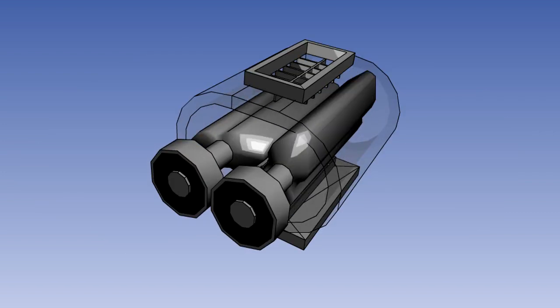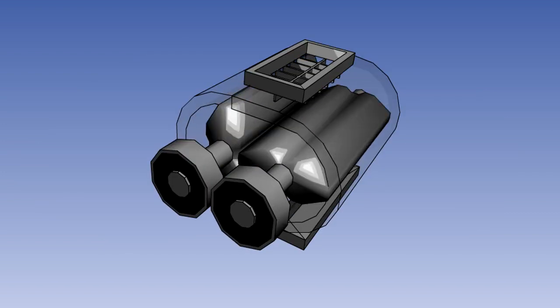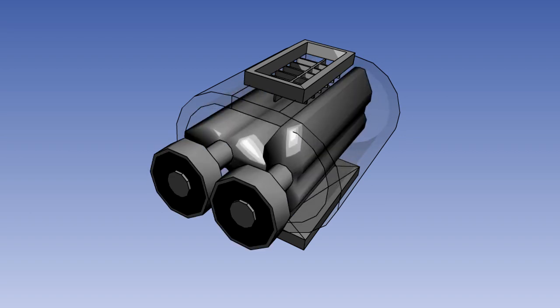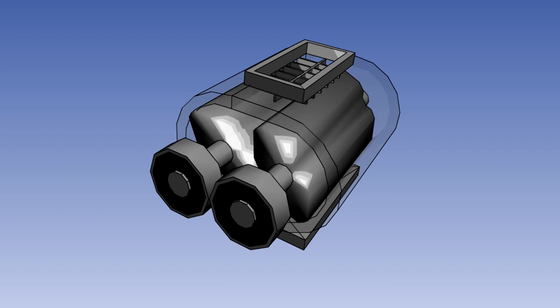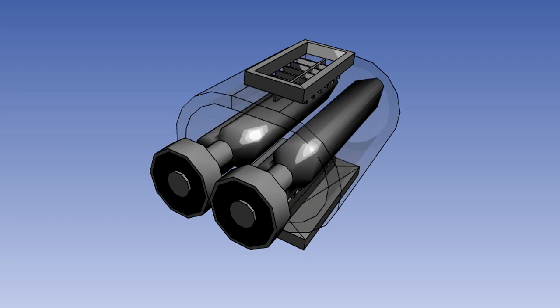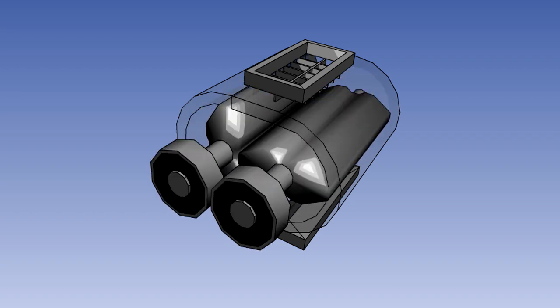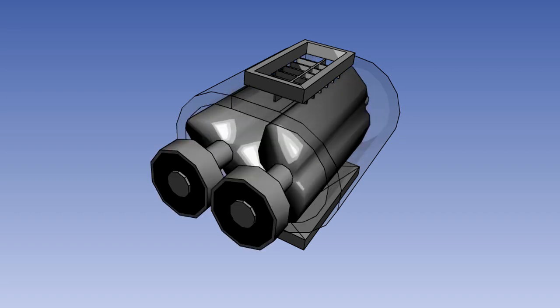One type of positive displacement blower is known as the roots blower. It is named after the roots brothers who first patented the basic design in 1860. It consists of two lobes which mesh together and are rotated by the engine gearbox.